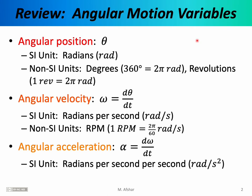In our last lecture we learned about the angular motion variables theta, omega, and alpha. These are the angular position, angular velocity, and angular acceleration of a rotating object. The mathematical structure of these variables should remind you of the linear motion variables. For example, theta should remind you of linear position x, while angular velocity should remind you of linear velocity v, which was defined as dx/dt. Alpha should remind you of linear acceleration, which was simply dv/dt.